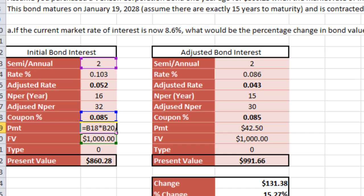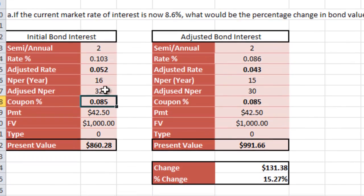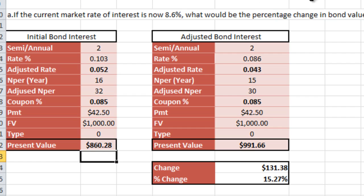Let's highlight that formula. We're going to divide by 2 for the adjusted rate and multiply by 2 to get the adjusted NPER. The future value is set to 1000 and our present value comes out to $860.28, which matches what is set in the problem.